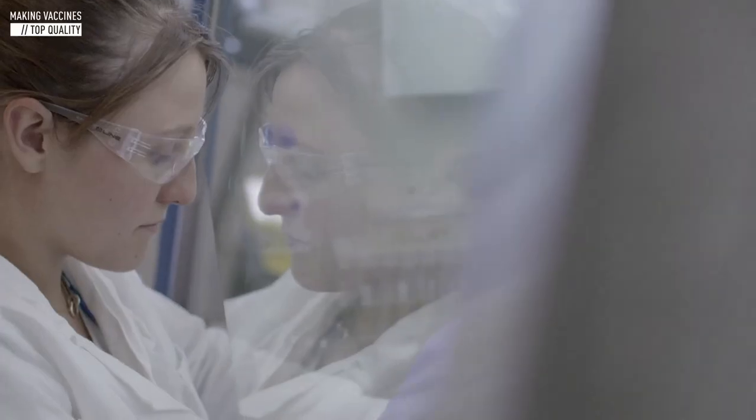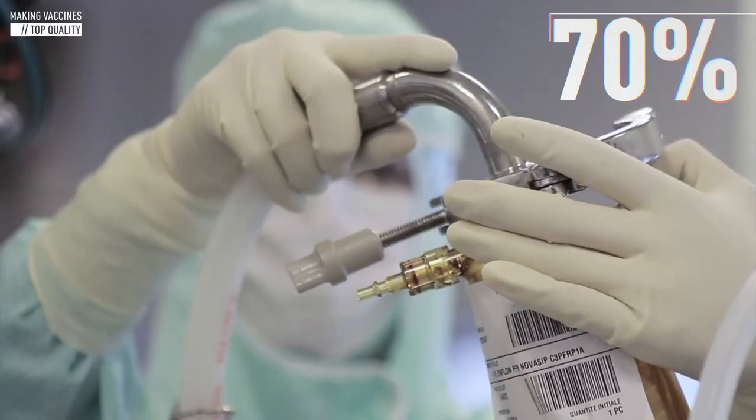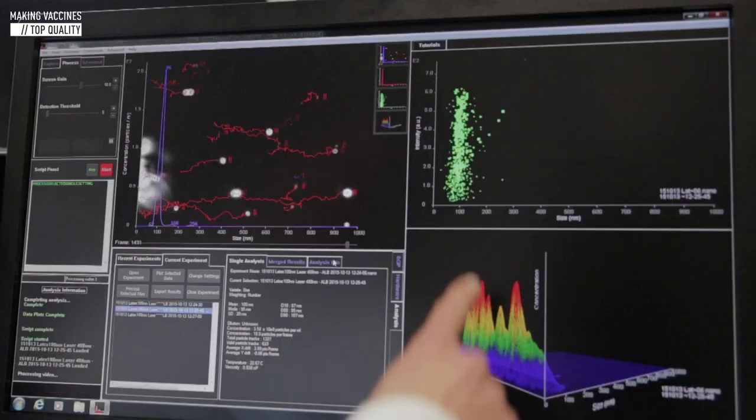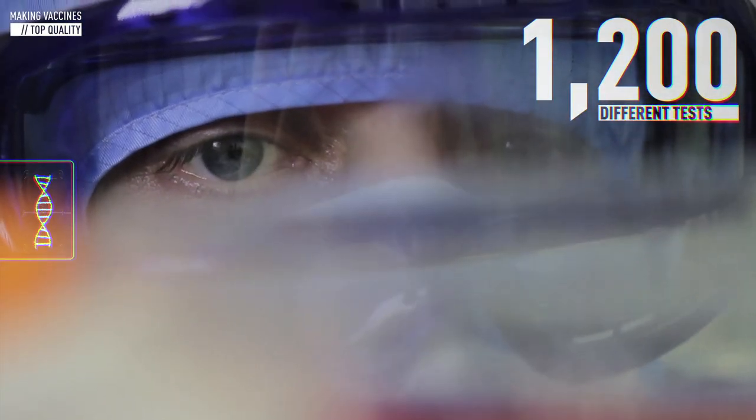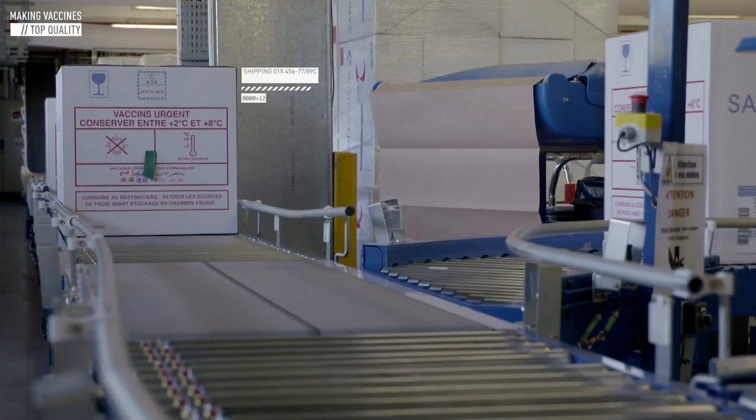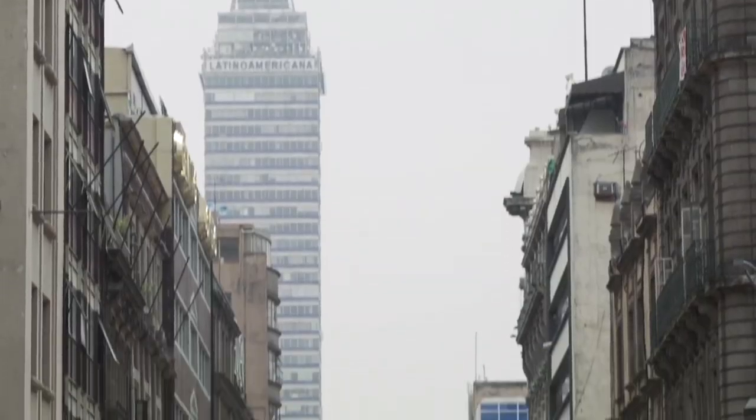In total, more than 70% of the time required to produce a vaccine is spent on these quality controls. Depending on the vaccine, we conduct up to 1,200 different tests throughout the process. For these reasons, the total time required to produce a vaccine ranges from 6 months for the flu vaccine, for example, to 36 months for combination vaccines.